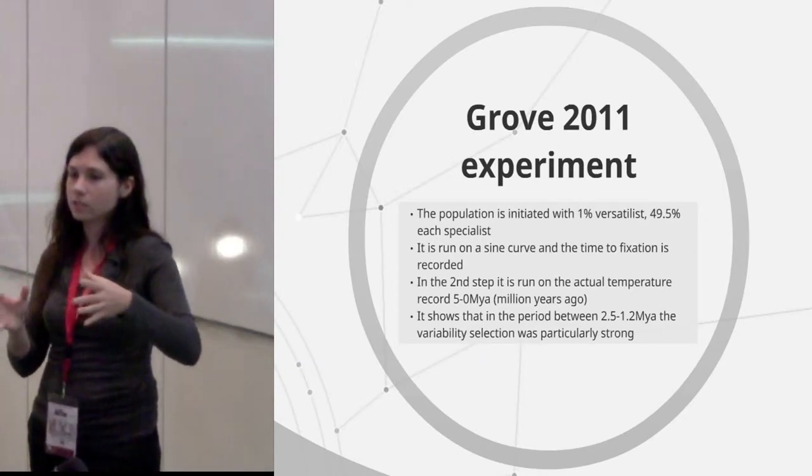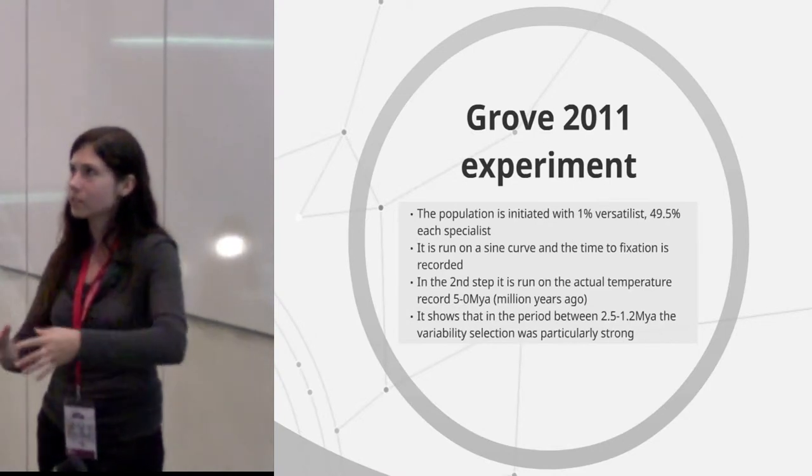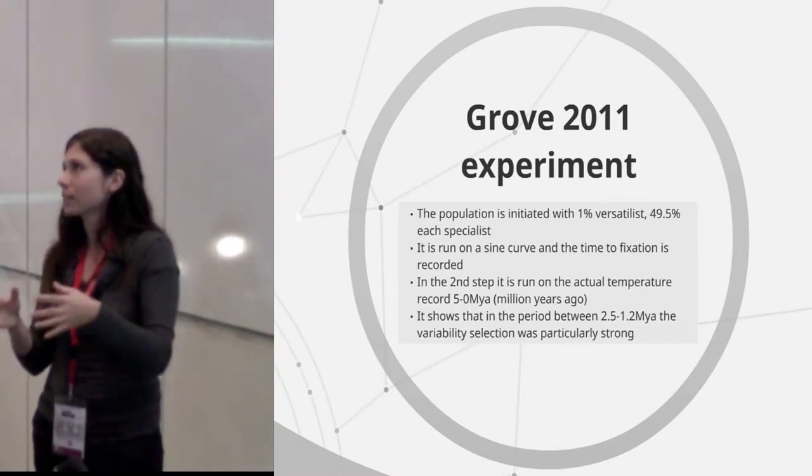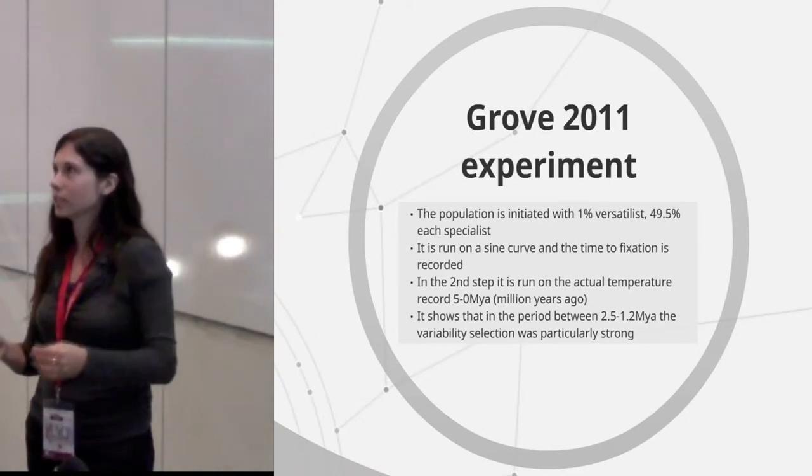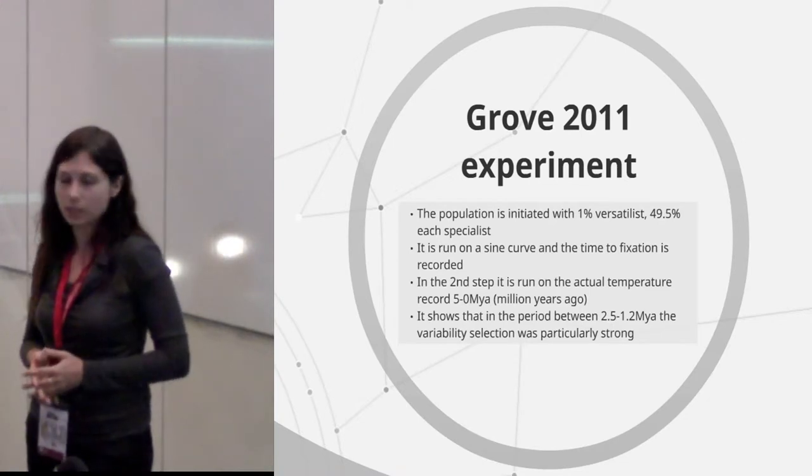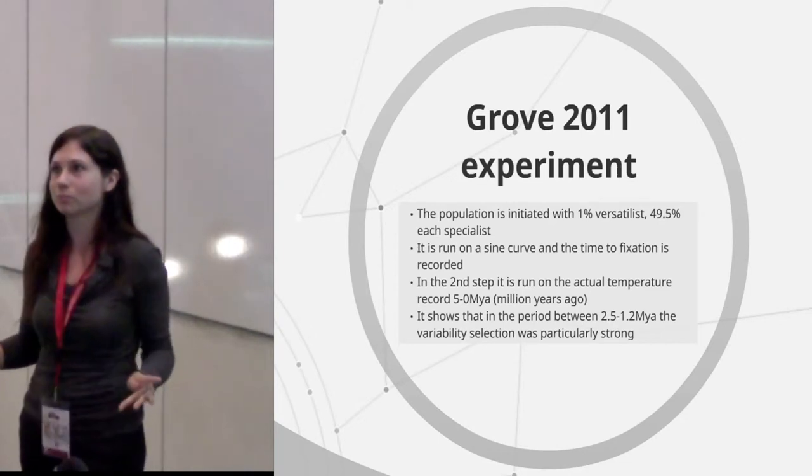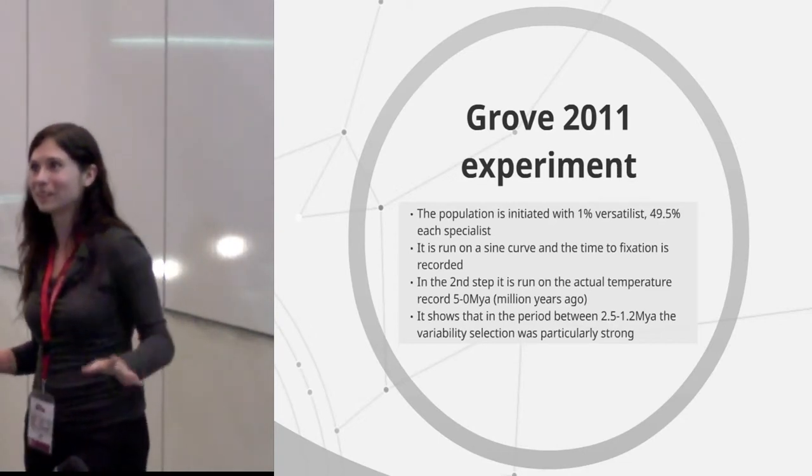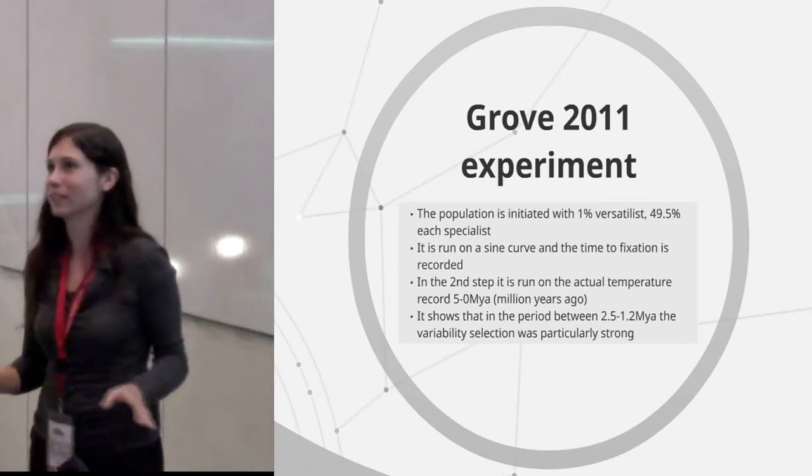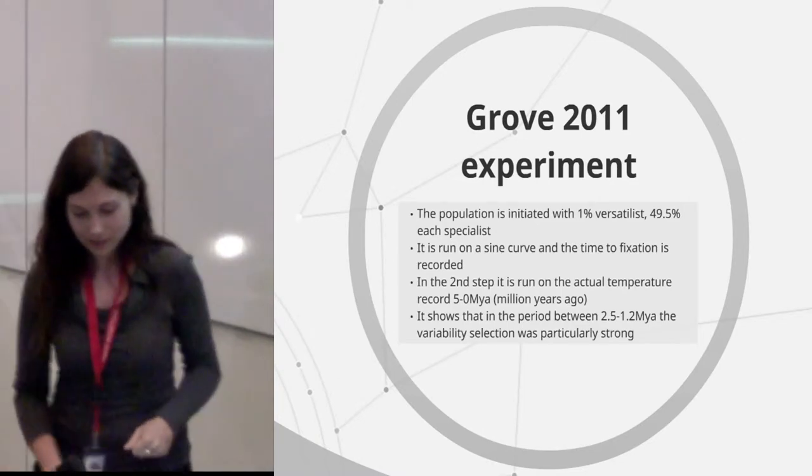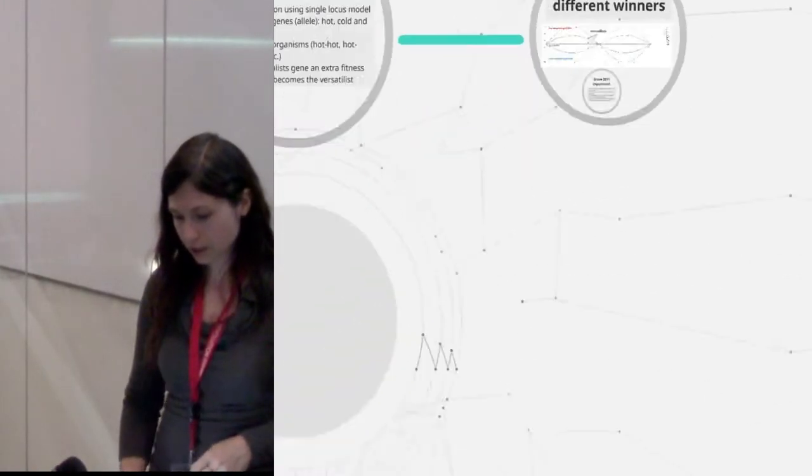The result was that he could recognize those time periods when the selection for the organisms that are adapted to change was particularly strong. And that happened between two and a half million years ago and 1.2 million years ago. And all of the Paleolithic specialists here will probably say, wow, that is actually where a lot of stuff was happening and we can see it in the record.